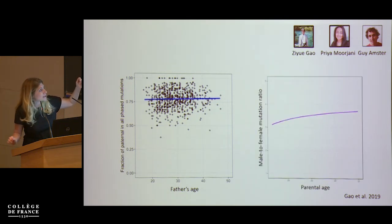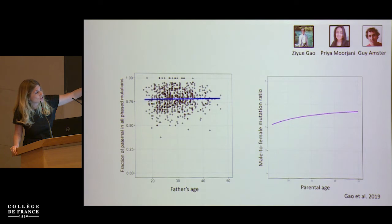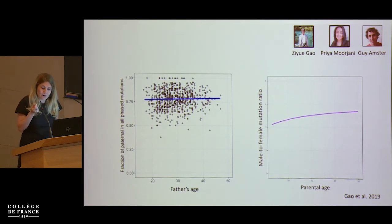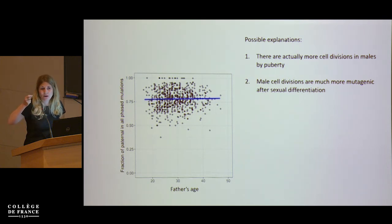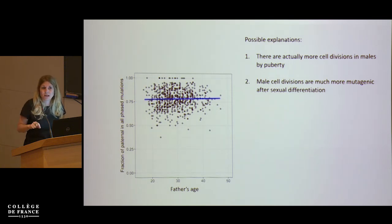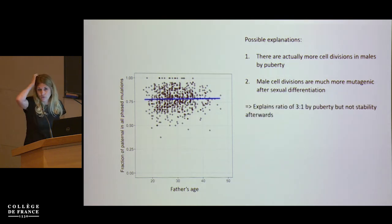We estimated sex-specific increases using all phased and unphased mutations by maximum likelihood, plotting the male-to-female mutation rate against parental ages for couples with similar ages. Perhaps most surprisingly, the ratio is already three to one by puberty with barely any increase after that. There are a number of possible explanations: more cell divisions in males by puberty than textbooks suggest, or each cell division being more mutagenic after sexual differentiation in males. Both are potentially sufficient to explain a ratio of three to one by puberty, but they don't readily explain the stability afterwards.